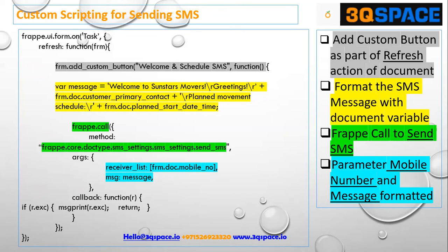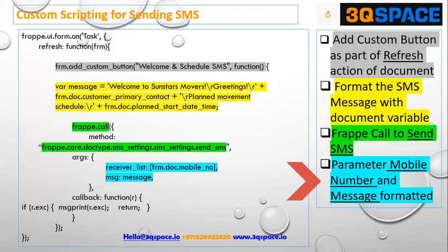The custom field utilized in the SMS is the primary contact of the customer. We then use the FRAPPE call to send the SMS, in which the two parameters specified are the formatted message and the mobile number of the customer. With this custom script, we can integrate the sending of SMS at the time of appointment creation with dynamic form fields integrated.